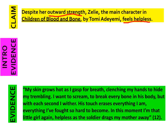The second part of your claim-based paragraph is your introduction to evidence. This is where you're going to help the reader understand what's happening in this moment in the story, wherever you've chosen your evidence from. The moment I've chosen to use for my evidence is when the guard touches Zelie and she shrinks and shows this weakness or helplessness — right after she's lashed out at them because they were demanding more taxes.